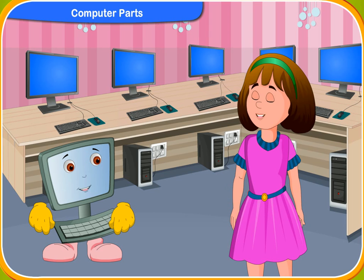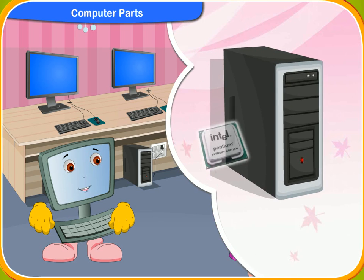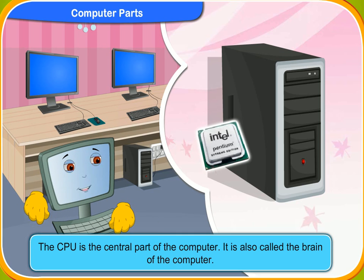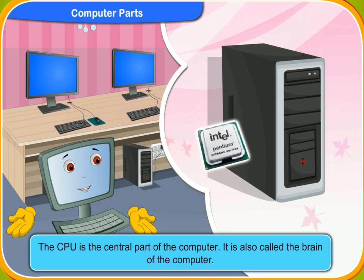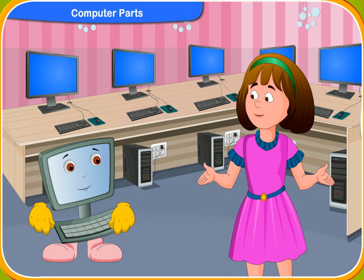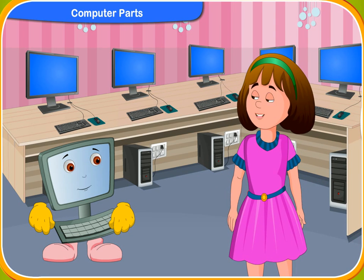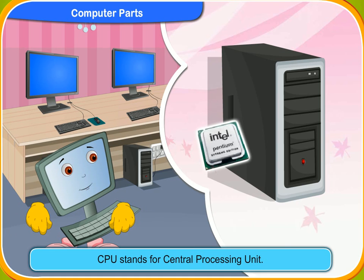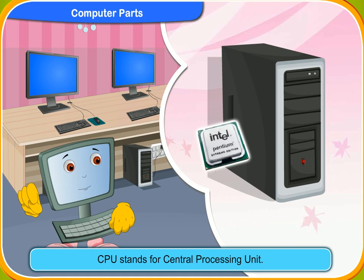What is the CPU? It looks like a big box. The CPU is the central part of the computer. It is also called the brain of the computer. The CPU tells the computer what to do. What does CPU mean, Klico? CPU stands for Central Processing Unit. It is the most important part of the computer.